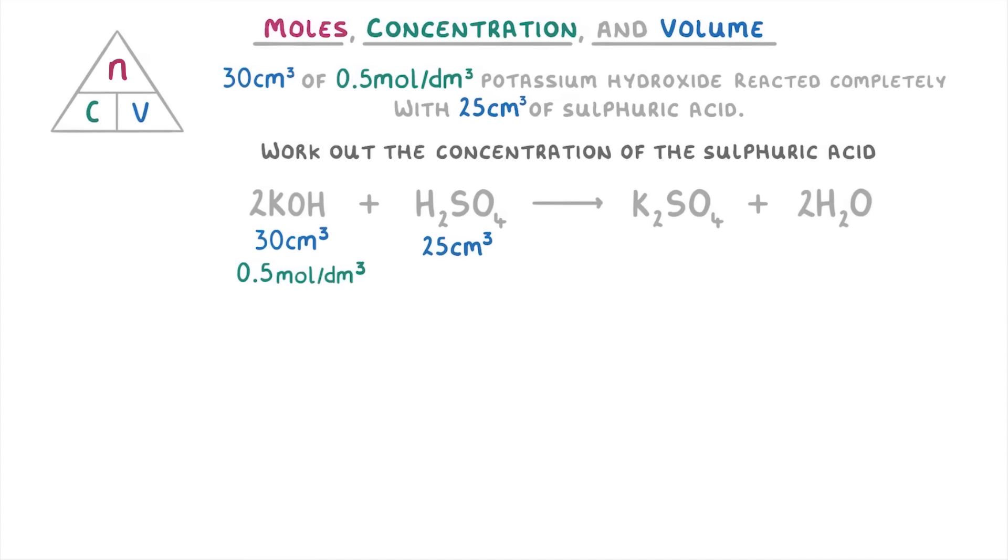Then, because this is a chemistry calculation, we know that we're going to need all of our volumes in decimetres cubed and not centimetres cubed. So we divide 30 by 1000 to get 0.03 decimetres cubed, and 25 by 1000 to get 0.025 decimetres cubed.